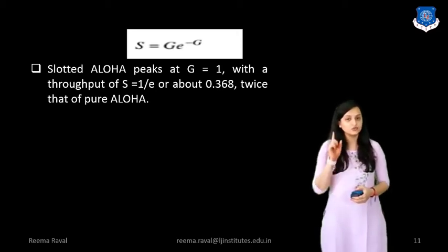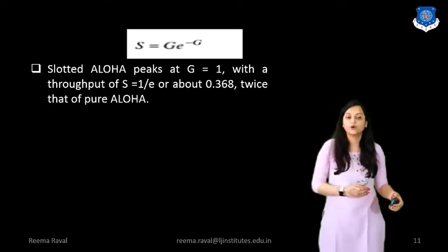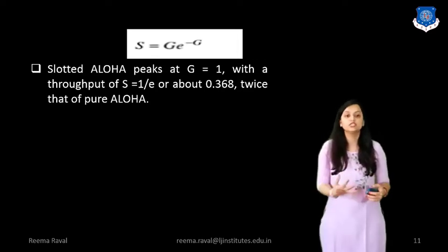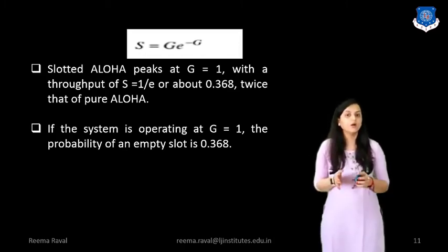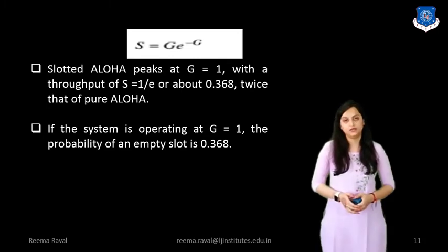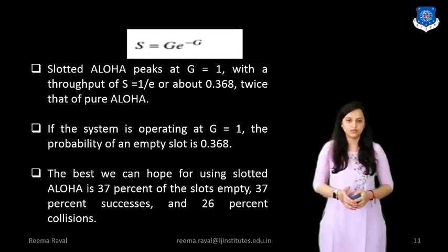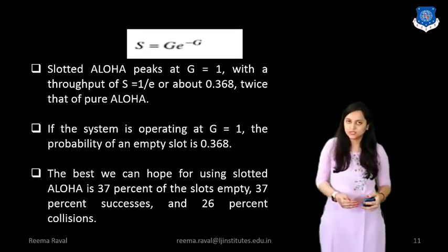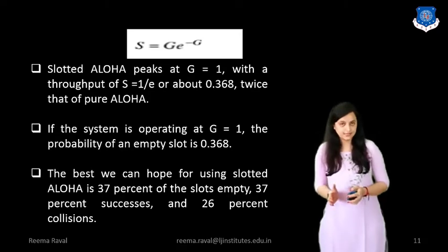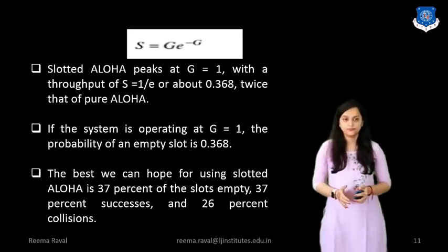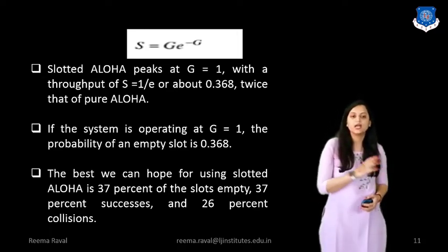Due to S = G × e^(−G), we get throughput 0.368, which is double that of Pure ALOHA's 0.184. If the system is operating at G = 1, the probability of an empty slot is 0.368. The best we can hope for using Slotted ALOHA is approximately 36.8% — about 37% of slots are empty, 37% are successful, and 26% result in collisions.